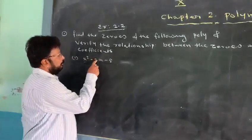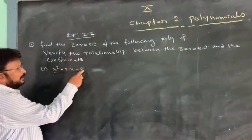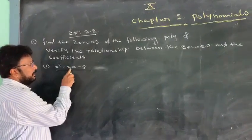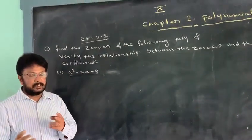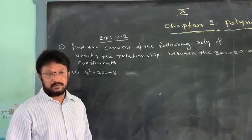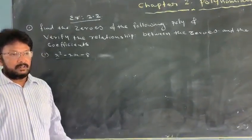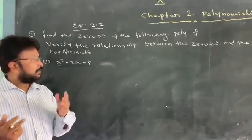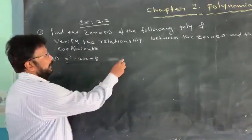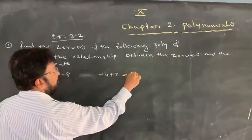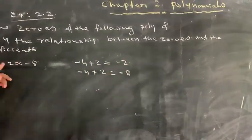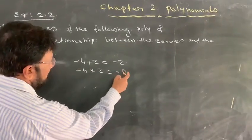Look here: x squared minus 2x minus 8. The constant is 8 and the middle term coefficient is minus 2. We have to find two numbers such that their sum equals minus 2 and their product equals minus 8. We know that 4 times 2 equals 8 — one is minus and one is plus. The bigger one, 4, is minus. So minus 4 plus 2 equals minus 2, and minus 4 times 2 equals minus 8. Their sum equals the coefficient of the middle term and their product equals the constant.